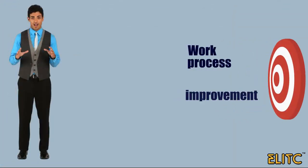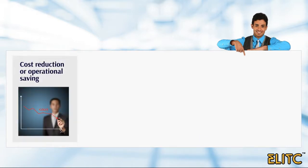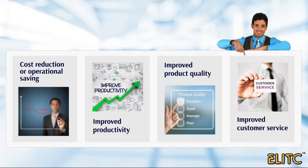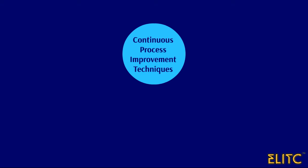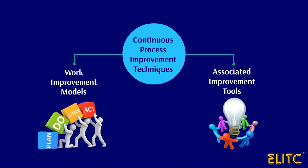Work Process Improvement Goals need to be aligned with the vision, mission, goal and objectives of the company. For instance, for a manufacturing process, improvement outcomes could be cost reduction or operational saving, improved productivity, improved product quality, and improved customer service. All these could be achieved by the smart use of continuous process improvement techniques that include work improvement models and associated improvement tools.